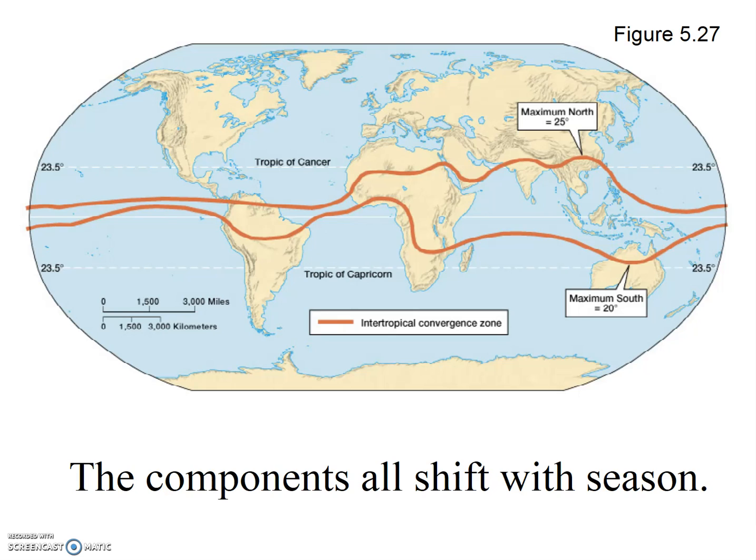We have already mentioned that the four pressure zones and three winds move slightly to the north during northern hemisphere summer and slightly to the south during southern hemisphere summer. This makes sense due to the changing location of the Sun's vertical rays throughout the year.